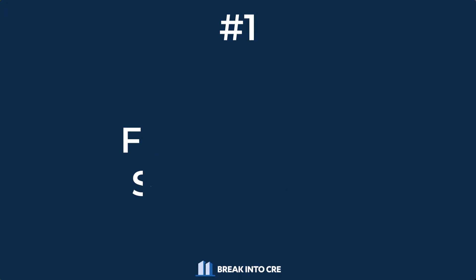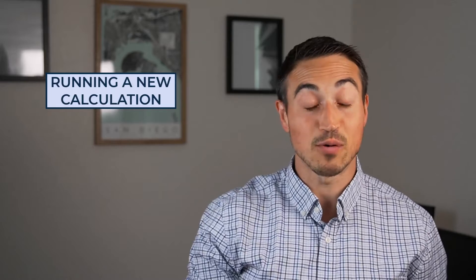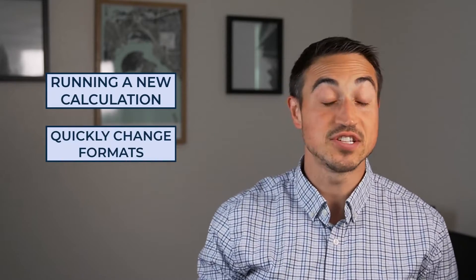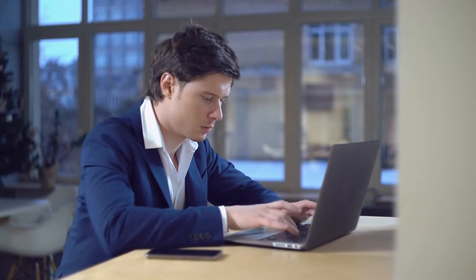The first shortcut is really an entire group of shortcuts that can help out with formatting — number formatting shortcuts. When building out a real estate financial model, or even when working in a pre-built model template and running a new calculation, you're very often going to need to quickly change the format of your numbers, especially when switching back and forth between different metrics.